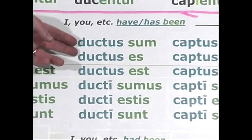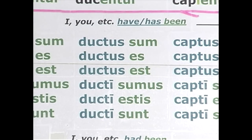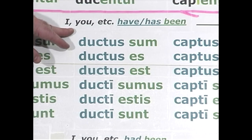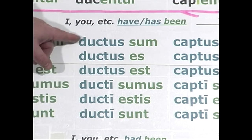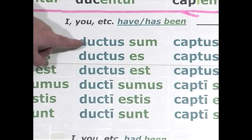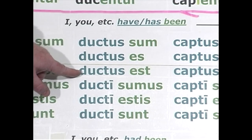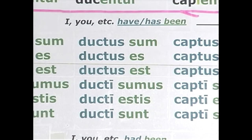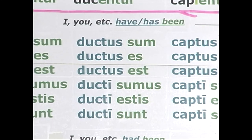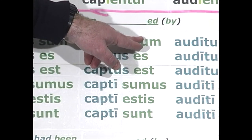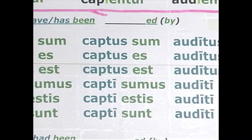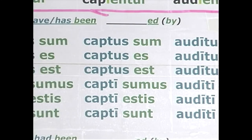The pattern is the same for the third conjugation. You combine the present conjugation of sum with the fourth principal part, ductus or ductum. Ductus sum, ductus es, ductus est — I was led or have been led, you, he, we, you plural, they have been led. Perfect passive indicative. Third conjugation io and fourth conjugation follow the same pattern: fourth principal part plus the present of sum — I have been captured/heard, and so forth.